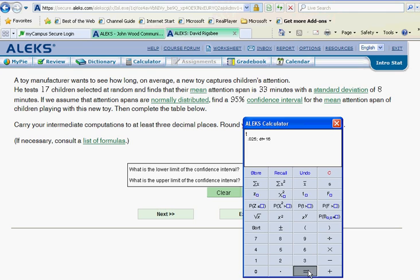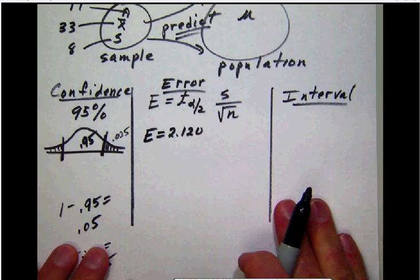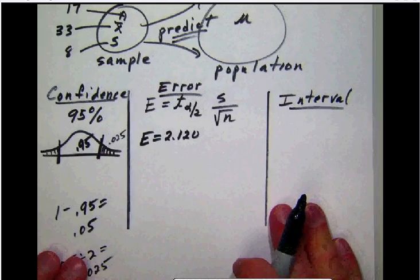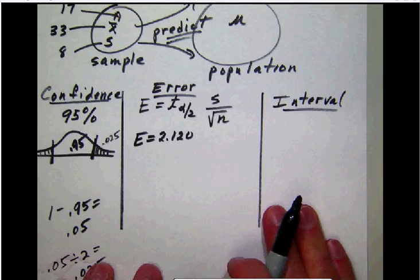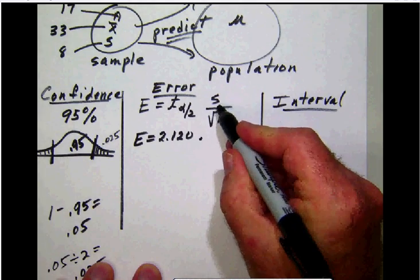And notice then this gives us our value for our t alpha over 2 and that is going to be rounded to three decimal places: 2.120. And since we have that value 2.120 we can go ahead and plug that in in our error step. Notice then that we're going to multiply that times s which is our sample standard deviation.